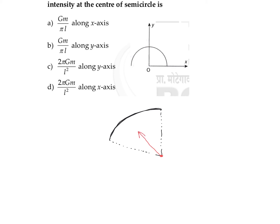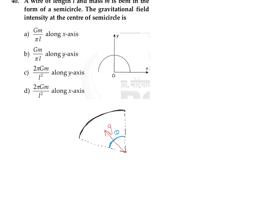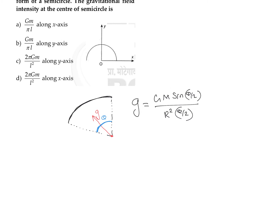I am directly writing the equation for gravitational field at the center due to a circular arc. If the angle made by the circular arc at its center is theta, then the gravitational field G is equal to Gm times sine(θ/2), divided by r² times (θ/2). We will use this equation for any circular arc.